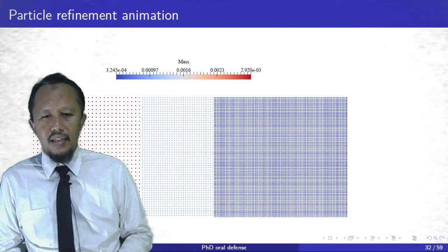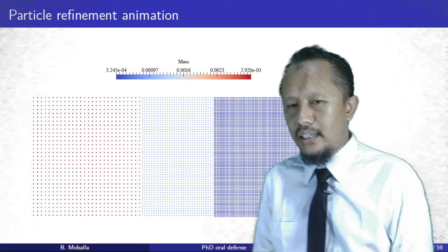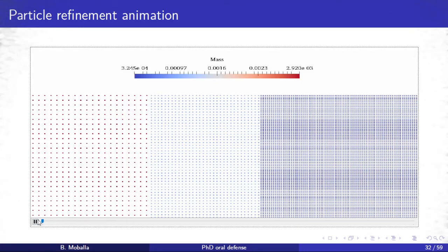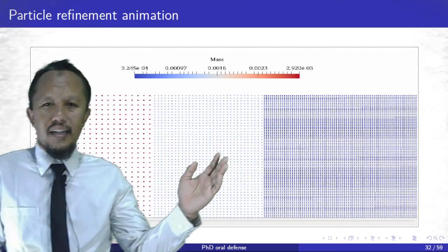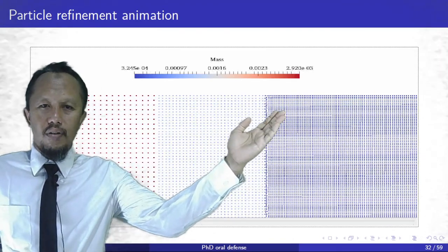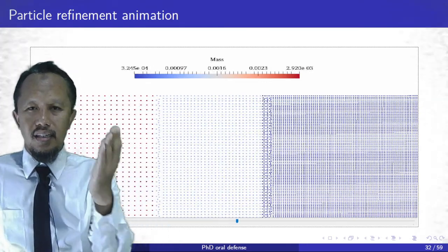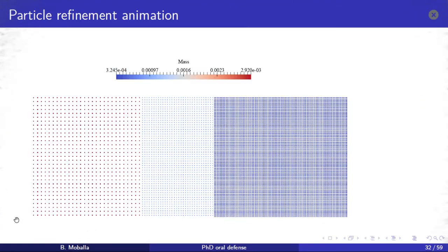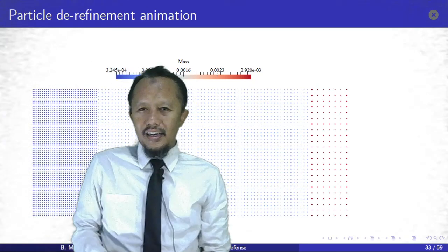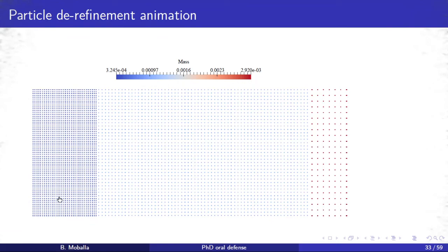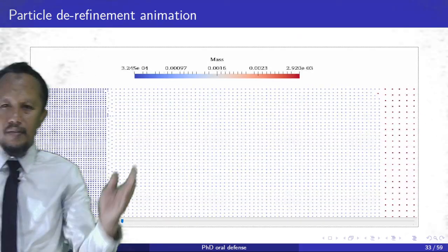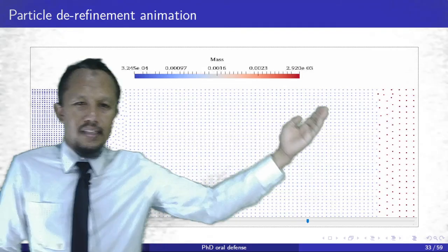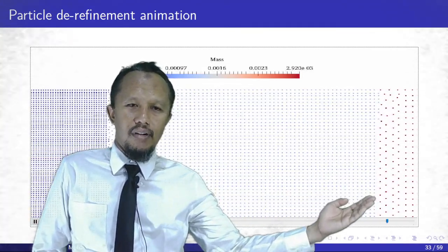Here is an animation of particle refinement, showing one particle splitting into three child particles repeatedly. And here is the animation for particle derefinement, showing three particles being joined into one particle.